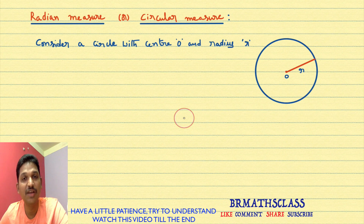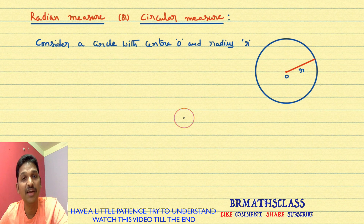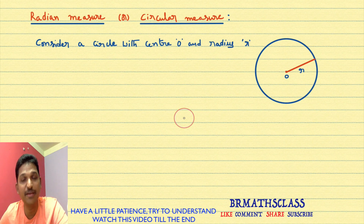In first class, we learned what is angle. In second class and third class, we learned about measurements of an angle. In second class, we learned what is degree measure. In third class, we learned what is centesimal measure, which is also known as grade measure.